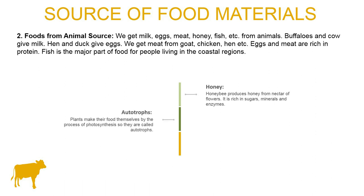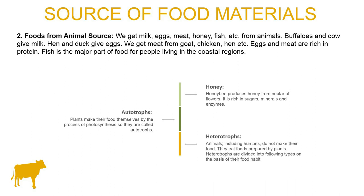Next are autotrophs. Plants make their own food by the process of photosynthesis, so they are called autotrophs. Next are heterotrophs — animals including humans that do not make their own food. They eat food prepared by plants.